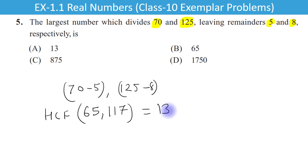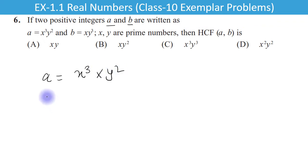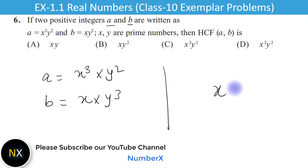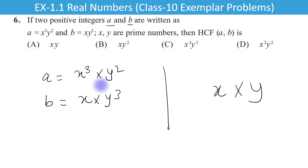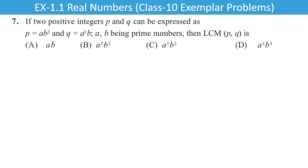Question 6: If two positive integers A and B are written as A = x cubed times y squared aur B = x times y cubed. Jab HCF nikalte hain to jo prime numbers hain unka minimum exponent lete hain. X ka minimum exponent 1 hai aur Y ka minimum exponent 2 hai. So HCF = xy squared, that is option B is the right answer.